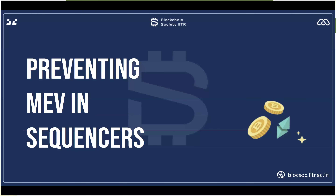Welcome everyone. In today's lecture we will study about preventing MEV in sequences. In the last lecture we had a brief intro about what MEV is, its types, and the good and bad results for the ecosystem. Today's lecture will go into more depth — how MEV really affects the ecosystem, both positively and negatively, and what steps the community is taking to tackle it or live with it.